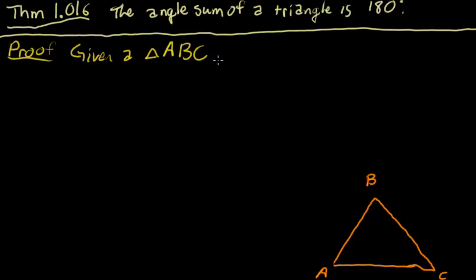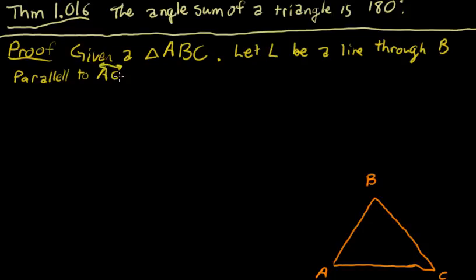We'll say let L be a line through B, and it needs to be parallel to the line AC. Parallel to AC. So that'll be L. Then we'll extend these just a little bit so we can have a line.